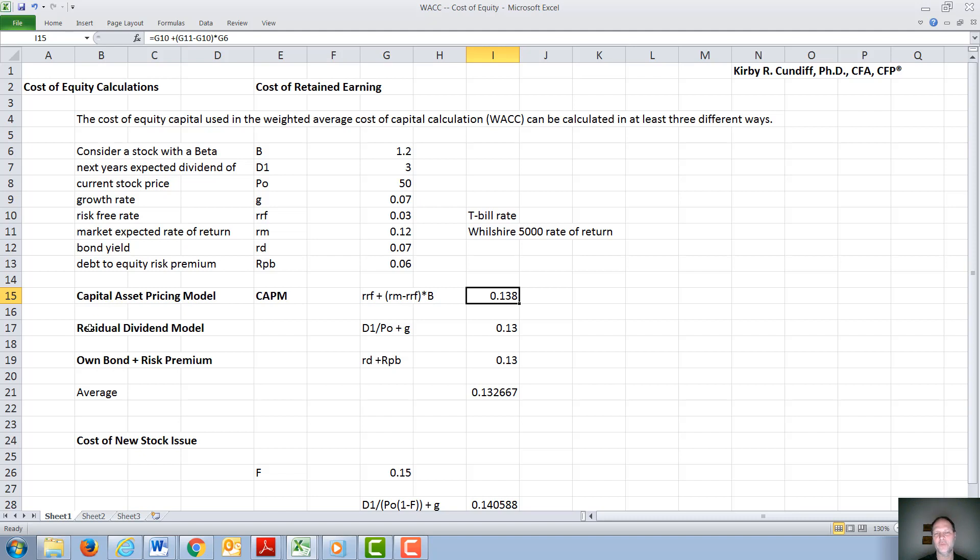We can also get an estimate of the cost of capital using the Residual Dividend Model, which would be D1 over P plus G, the dividend yield plus the capital gains yield. When filing taxes, dividends go on Schedule B and capital gains go on Schedule D. For our company, the dividend yield is 3 over 50. The capital gains yield for a constant growth stock is 7. The two add up together to 13, relatively close to the Capital Asset Pricing Model estimate.